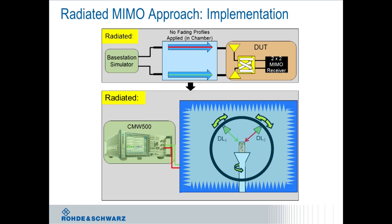The way we're doing this from an implementation perspective, we're introducing a second downlink antenna in the OTA system — second, meaning because every SISO system already has the first downlink antenna. With this implementation, we can generate two MIMO streams with a CMW500 that connect each MIMO stream to a downlink antenna, so that the device under test is exposed to two independent MIMO streams.